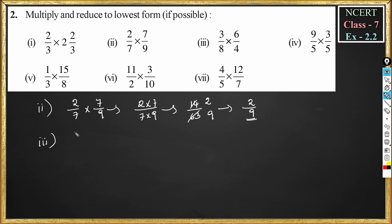Problem number 3: 3 by 8 into 6 by 4. Numerator into numerator is 3 into 6, divided by denominator into denominator is 8 into 4. 3 into 6 is 18, 8 into 4 is 32. The common factor is 2, so 2 times 9 and 2 times 16. The answer is 9 divided by 16.